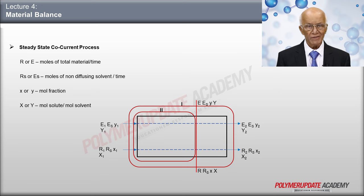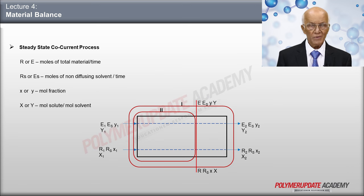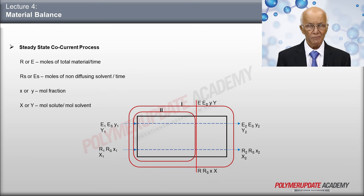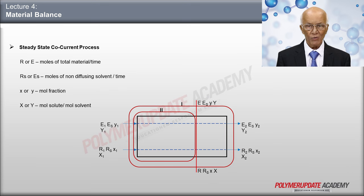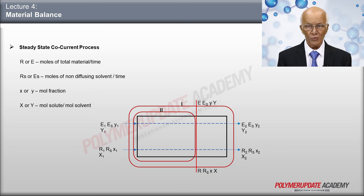Similarly, phase E is defined by E1, ES, y1, and capital Y1. E1 refers to the total moles of substance entering, ES is the total moles of non-diffusing solvents. Small y1 is the mole fraction of the diffusing substance A, and capital Y1 is the moles of diffusing substance A divided by non-diffusing solvents ES. In the same way, the outlet positions are defined as E2, ES, Y2, and capital Y2, and R2, RS, X2, and capital X2.